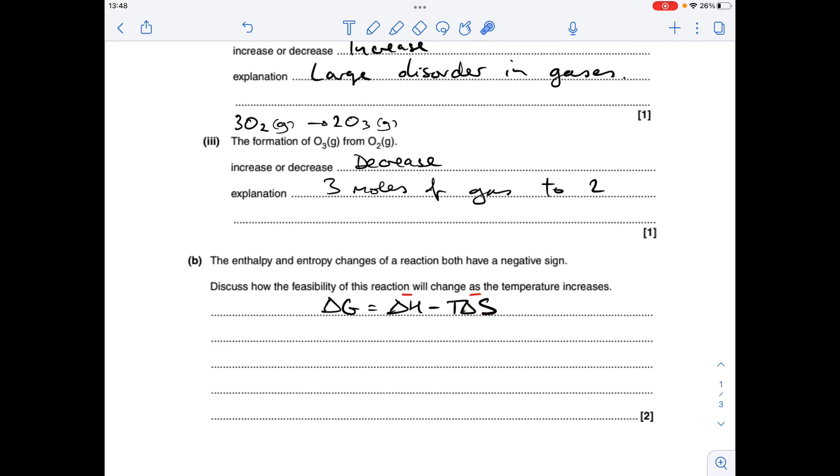So remember, feasibility is all about delta G being less than zero or negative. So as temperature increases, you've got to think about what's going to happen to this term here. Notice that we've got a double negative there, so this is actually going to be a positive term.